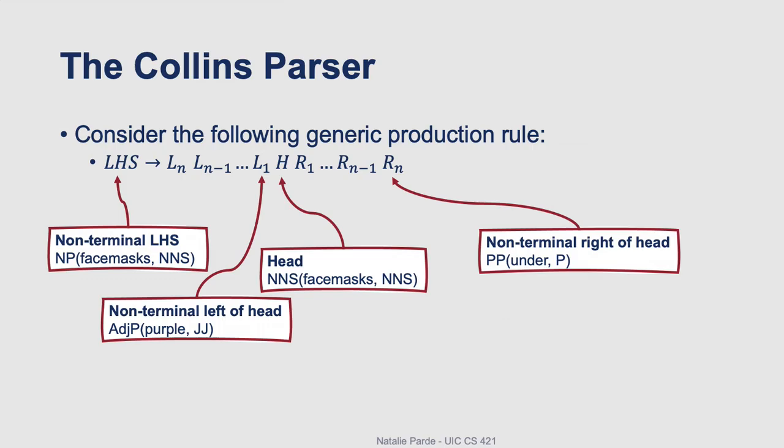We can do this using, for example, the Collins parser, which is a popular lexicalized parser. The Collins parser frames all internal production rules using a specific equation. On the left-hand side, we have a non-terminal parent constituent, and on the right-hand side, we have the child constituents that it generates. These constituents can be broken down into the head, the non-terminals to the left of the head, and the non-terminals to the right of the head.